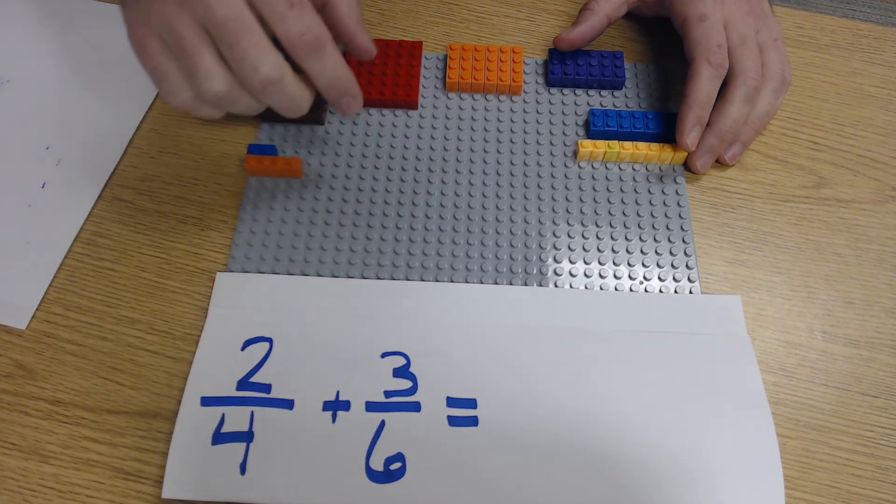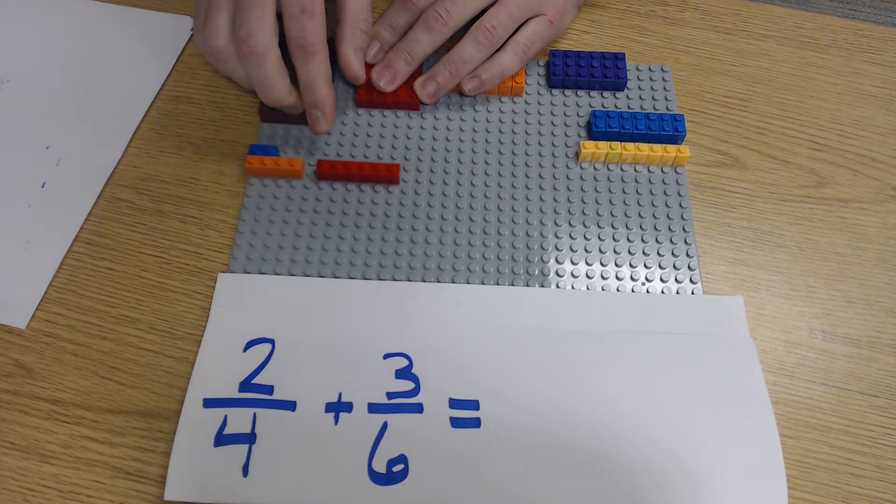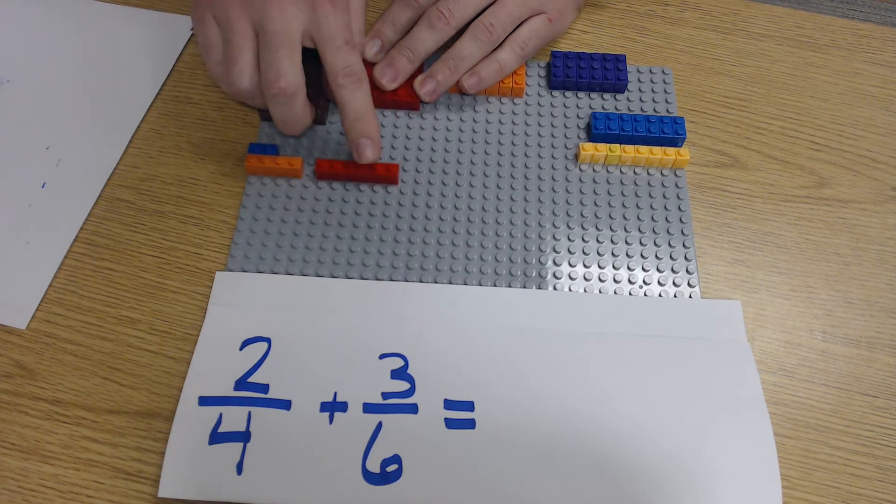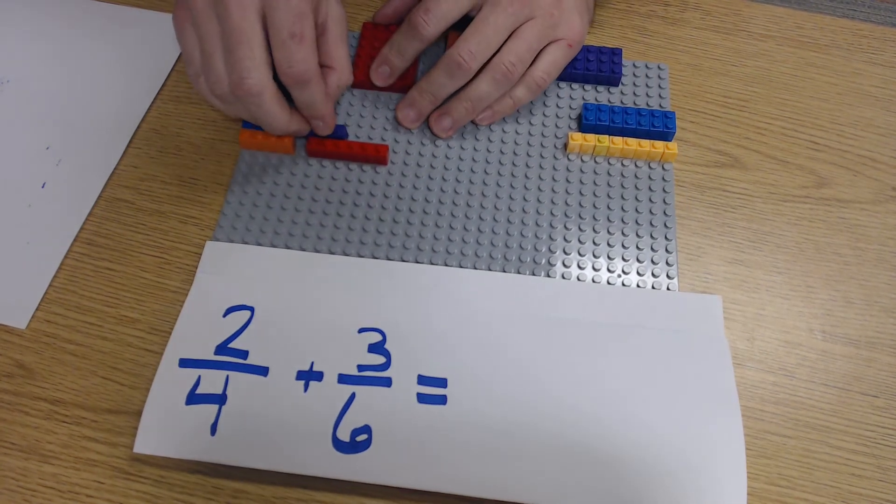Next I'm going to build my three-sixths. I'm going to start with my denominator. There's my sixth, one, two, three, four, five, six. How many do I have? I have three, so I'm taking my three Lego and put it right there.